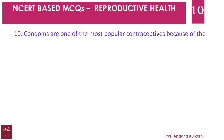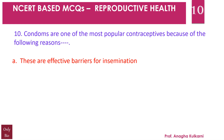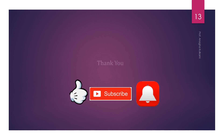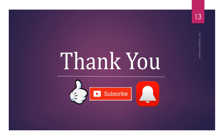Question number 10: Condoms are one of the most popular contraceptives because — A. they are effective barriers for insemination, B. they do not interfere with the coital act, C. they help in reducing the risk of STDs, D. all of the above. The correct answer is D — all of the above. Condoms are popular because they are effective barriers for insemination, do not interfere with the coital act, and help reduce the risk of sexually transmitted diseases. Please follow the entire series, subscribe if you are new, and start studying!